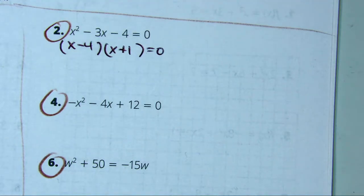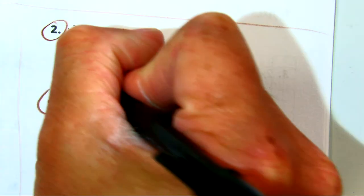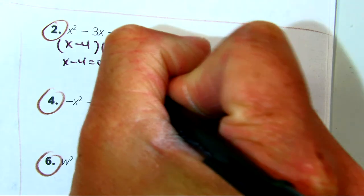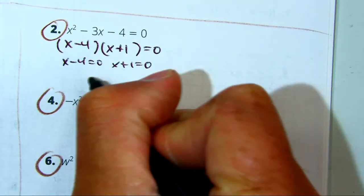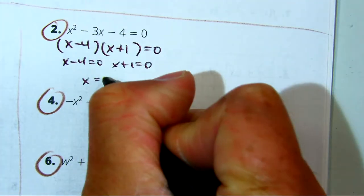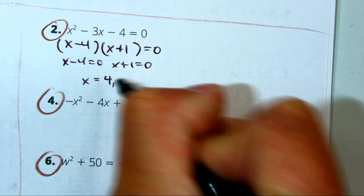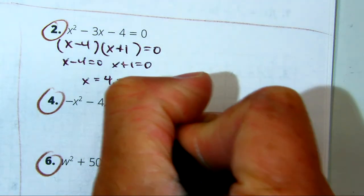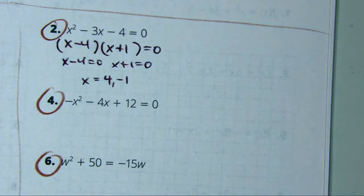And then you make them equal to 0. So you do the 0 product. And then you get x plus 4, or x equals 4, and then x minus 1. Raise your hand if you got x equals negative 4 and x equals negative 1 as your answer. Good.